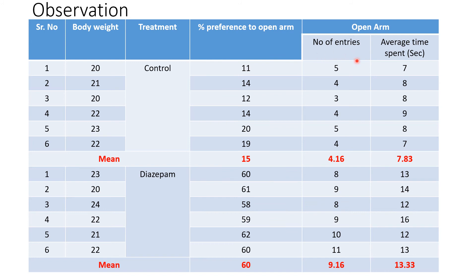The number of entries in the open arm for the control group is 4.16, and this increased to 9.16 with diazepam treatment. The average time spent in the open arm initially is very low at 7.83 seconds, but when diazepam is administered, it reduces anxiety and increases the average time spent to 13.33 seconds.